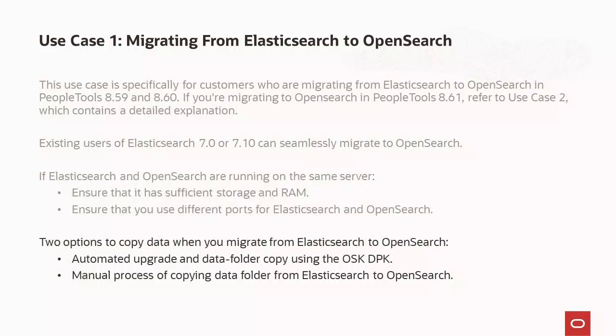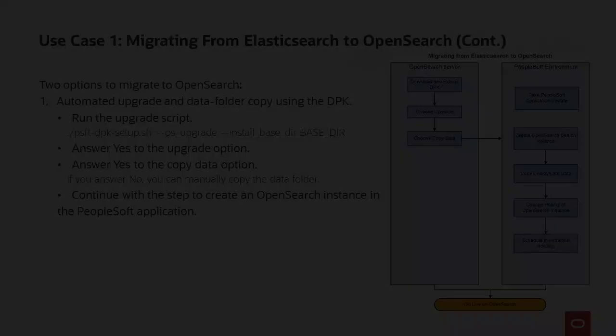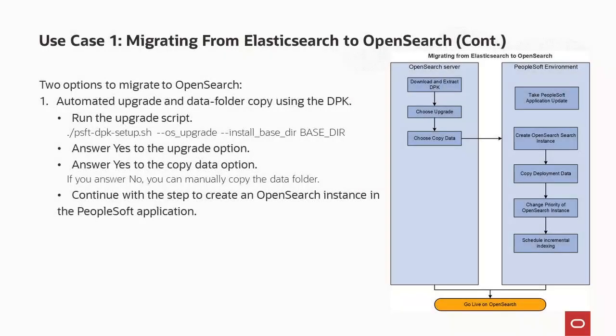You have two options to copy data when you switch to OpenSearch: use the automated process to install OpenSearch and copy the Elasticsearch data folder, or manually copy the Elasticsearch data folder. We are discussing the upgrade process on a Windows environment. On Windows, due to directory permissions, you must stop the Elasticsearch instance or service to copy the data before the upgrade process.